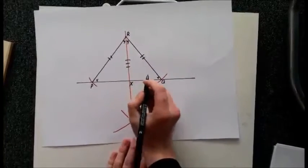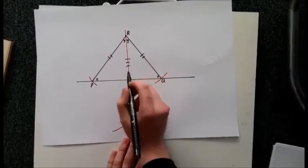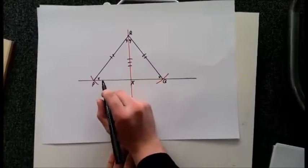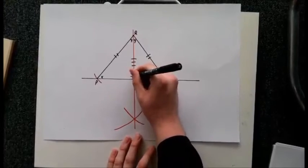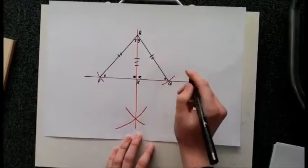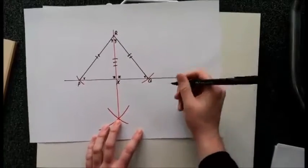The triangles are congruent because two sides and an angle are equal. That means the two angles on the inside are equal, and I call them Z. So in the big triangle,